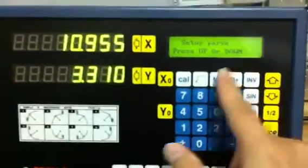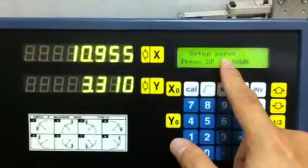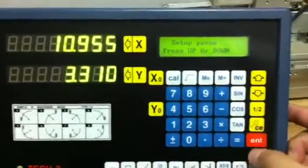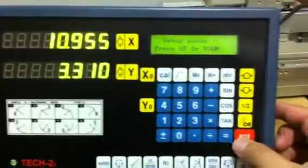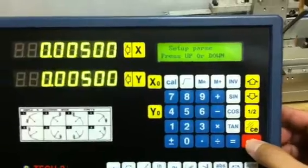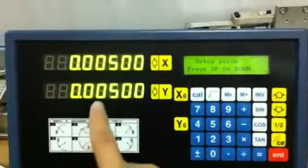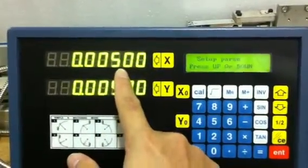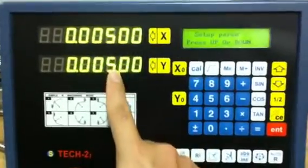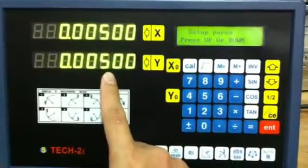Now you are in the setup parameter resolution. To change the resolution, just press the enter key. The current setting for the X resolution is 5 micron, and the current setting for the Y axis is 5 micron.